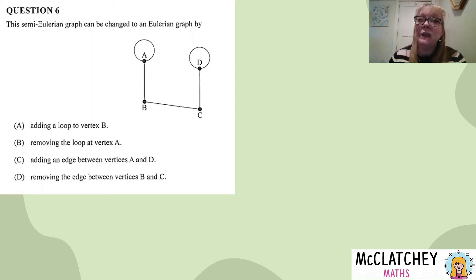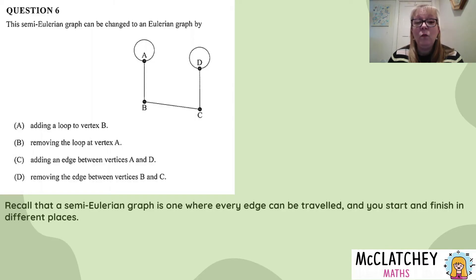Question six. This semi-Eulerian graph can be changed to an Eulerian graph by adding a loop, removing a loop, adding an edge or removing an edge. Before we jump into looking at the right answer, it's important to understand what is meant by semi-Eulerian graph.